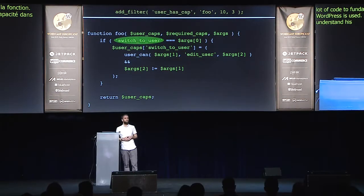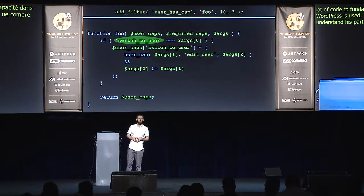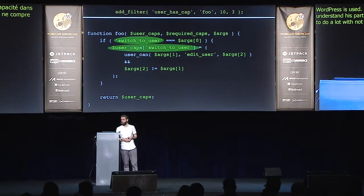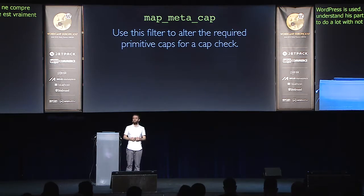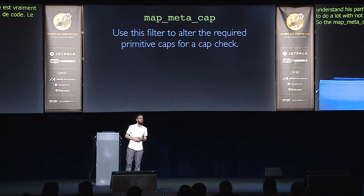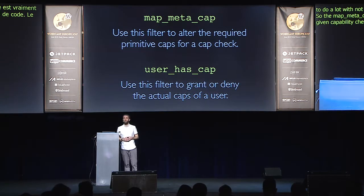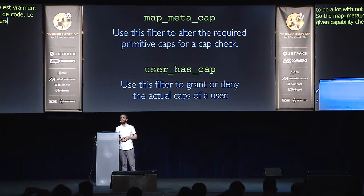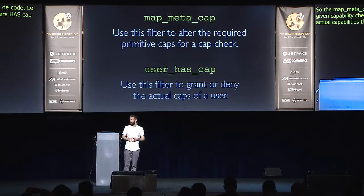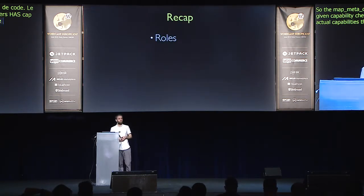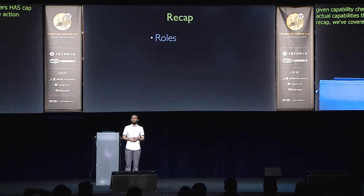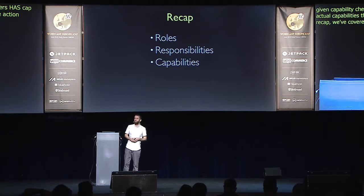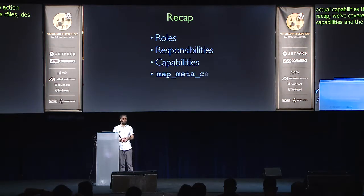It's important to remember that even if you don't understand this particular example, these filters are very powerful and allow you to do quite a lot with not a lot of code. As a recap: the map_meta_cap filter allows you to alter the required capabilities for a given capability check, and user_has_cap allows you to filter the actual capabilities that a user has. We've covered roles and their responsibilities, capabilities and how you can alter them, and both filters.